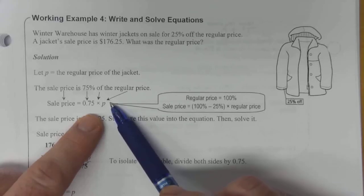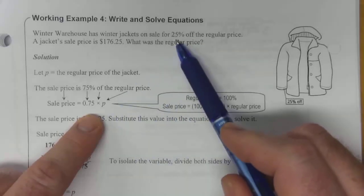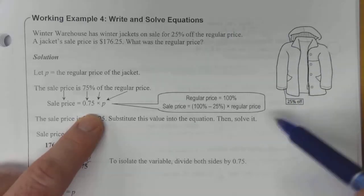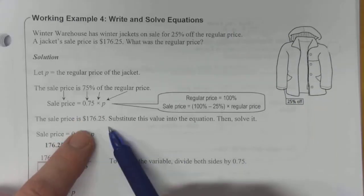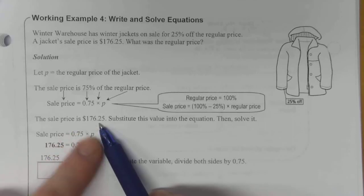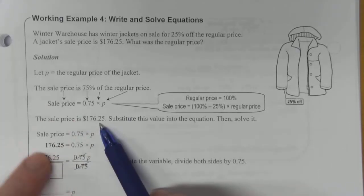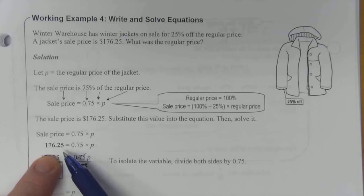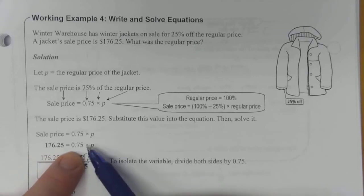Hopefully you recognize that 100% is the full price. If you subtract 25% you get that 75%. So the sale price we're told is $176.25. We're going to put that value into the equation. So the sale price is on the left, and that is equal to 0.75 times P. P is what we're trying to calculate.